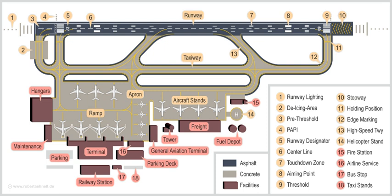Tower control is responsible for aircraft on the runway and in the controlled airspace immediately surrounding the airport. Tower controllers may use radar to locate an aircraft's position in three-dimensional space, or rely on pilot position reports and visual observation. They coordinate the sequencing of aircraft in the traffic pattern and direct aircraft on how to safely join and leave the circuit. Aircraft which are only passing through the airspace must also contact tower control to remain clear of other traffic. Traffic patterns help assure smooth traffic flow between departing and arriving aircraft.